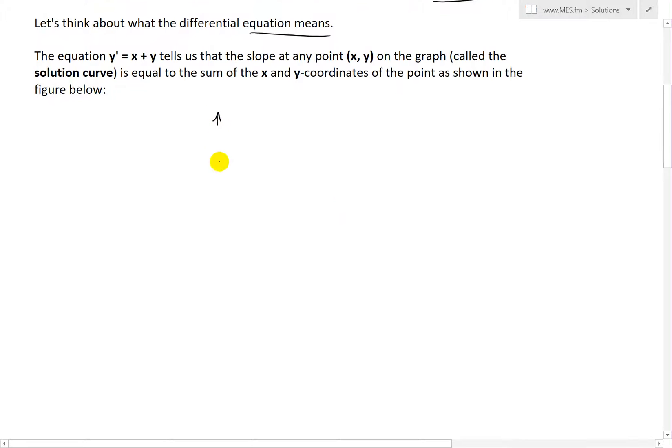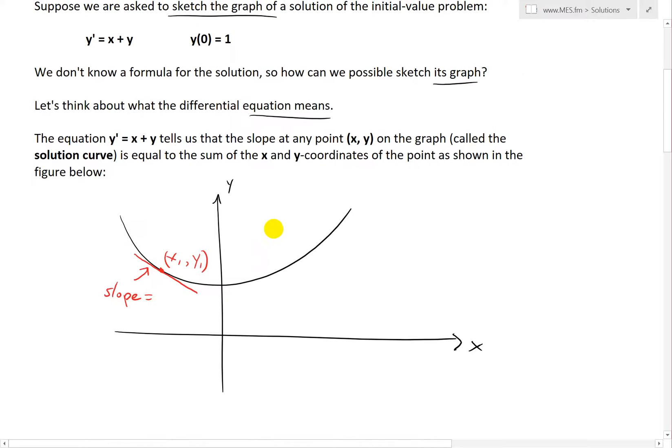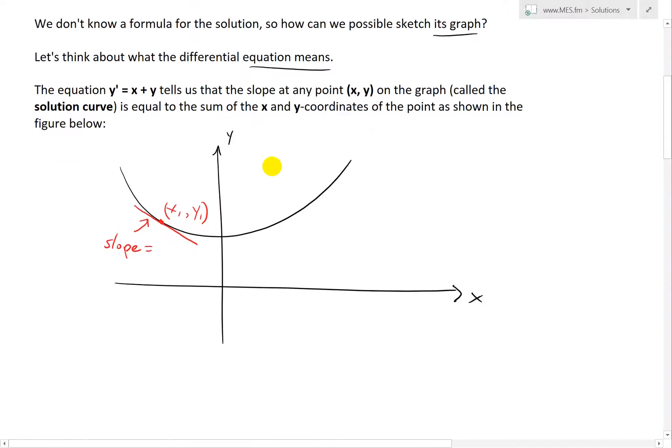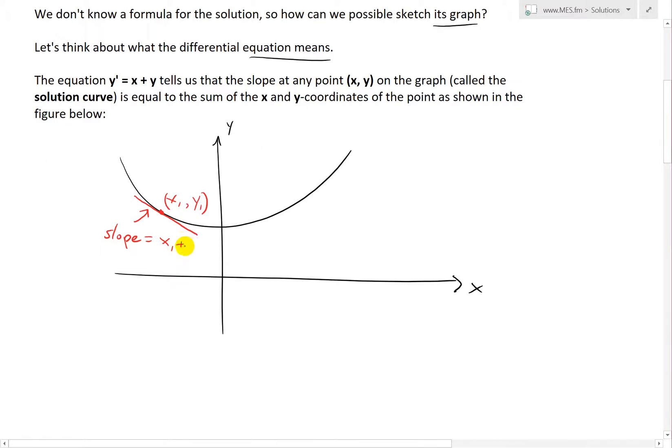So if I were to graph this out, let's draw a general x-y axis. Let's say the solution looks something like this. If this is our solution graph, and let's pick a random point at (x₁, y₁), if you were to draw the slope or tangent line across it, this tangent line has a slope. If this is a solution to this initial value problem, then the slope has to be simply x + y, or in this case x₁ + y₁.